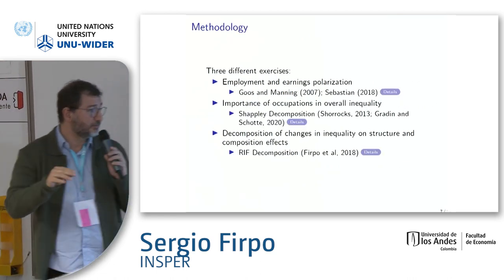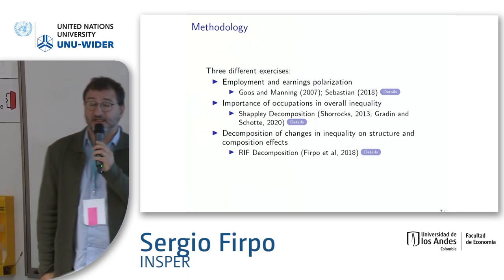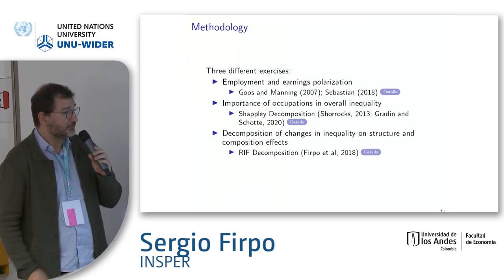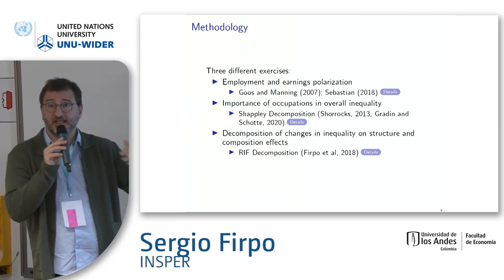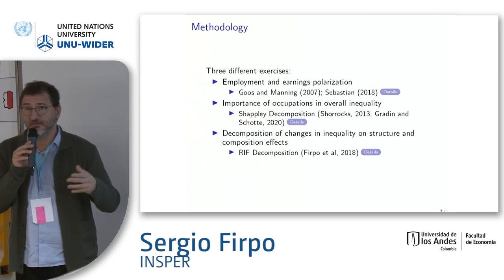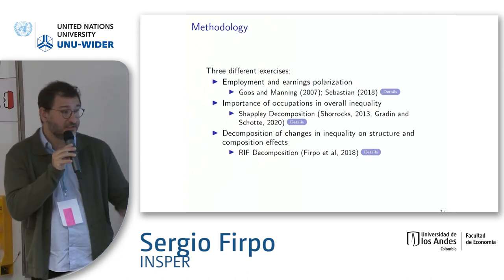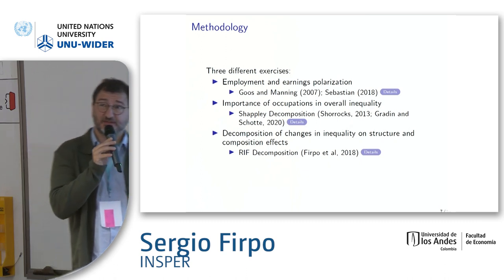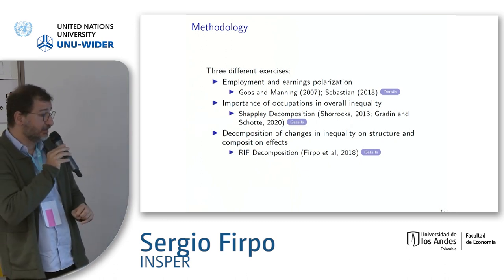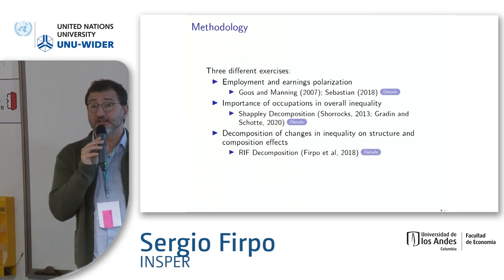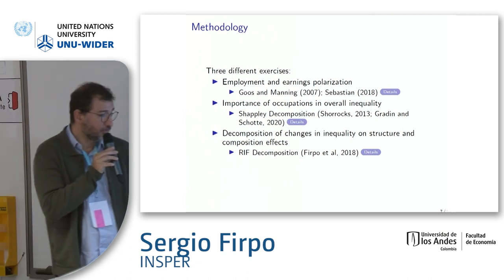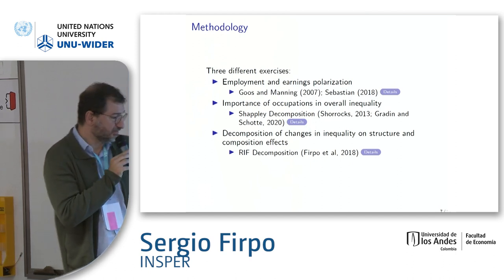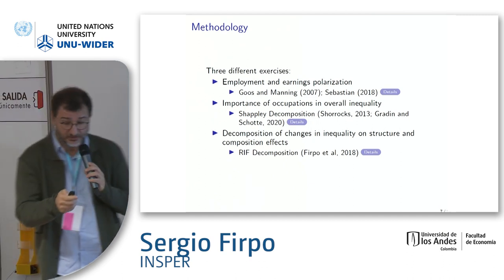We first examine whether we have polarization by running the same regressions shown previously. Then we look at the Gini and try to decompose it — the Gini is not strictly decomposable but we perform a kind of decomposition to assess the importance of employment and occupations in explaining changes in the Gini over time. We also look at Gini RIF regressions and at specific quantiles using the RIF decomposition methodology.